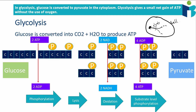Glycolysis consists of four different steps, but you do not need to know any of the intermediate compounds — the compounds in between when we go from glucose all the way to pyruvate. So first you have a molecule of glucose, which has six carbons — the formula for glucose is C6H12O6. Then two molecules of ATP are going to transfer their phosphate groups to this glucose molecule, which is what we call phosphorylation — we're just adding a phosphate group.